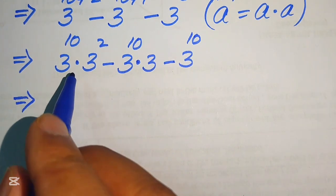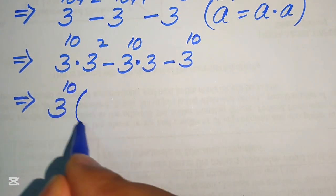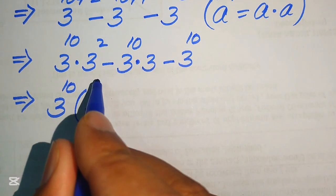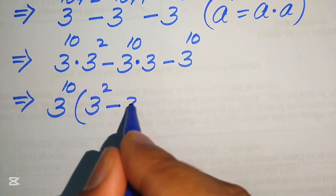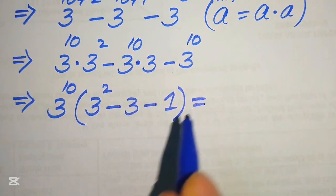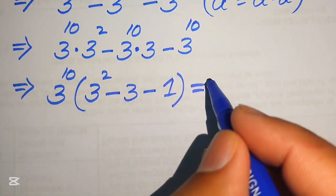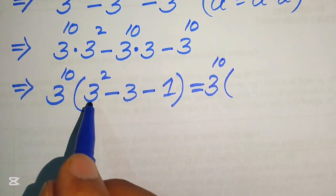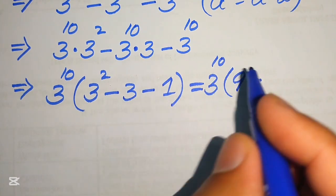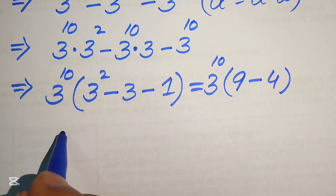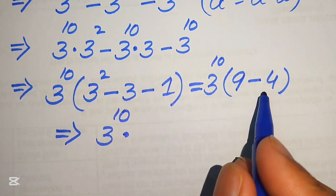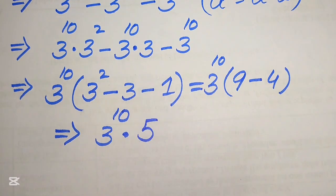In the next step, we take out 3 to the power of 10 as a common factor. After factoring, the remaining values inside the bracket are 3 squared minus 3 minus 1. Since 3 squared equals 9, we get 9 minus 3 minus 1, which equals 5. So the expression becomes 3 to the power of 10 multiplied by 5.